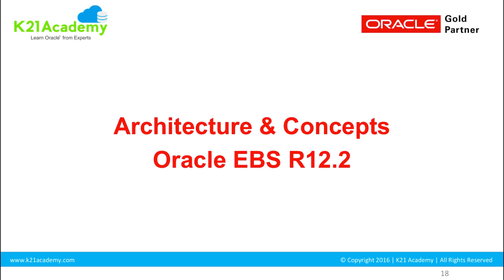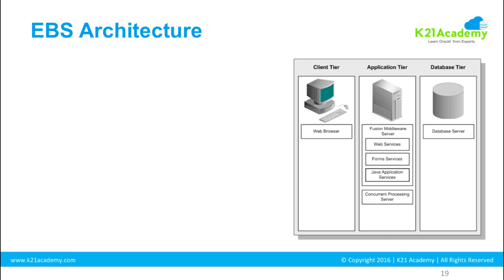This is where the real fun begins. Looking at the architecture diagram of Oracle eBusiness Suite, it is a three-tier architecture. You have the client tier on the extreme left, where you have browsers. Then you have the application tier, which is the middle tier — also called the middle tier. And on the right, you have the database tier.